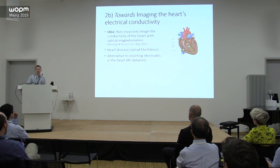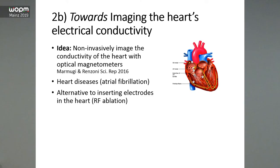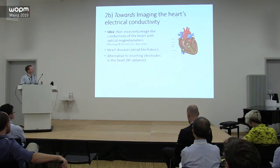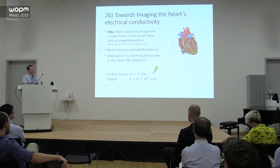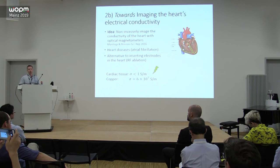Now to the main topic: working towards imaging the heart's electrical conductivity. The whole heart is based on electrical conduction, so the electrical conductivity must play an important role in how the heart works. There was an idea by Luca Mammoji and Peruchi Ronsoni about using an array of optical magnetometers to image the conductivity of the heart in three dimensions, which could be useful for screening heart diseases including atrial fibrillation. One issue is that the conductivity sigma is quite small — roughly one Siemens per meter — about 60 million times smaller than copper.